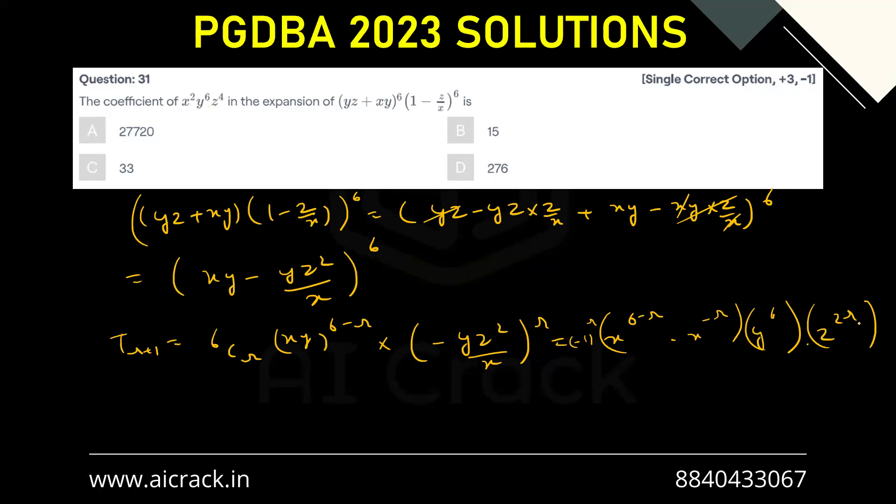Now, since r equals 2, this becomes 1 only. And the coefficient becomes 6C2. That is 6 into 5 by 2, that is 15. So b is the correct answer.